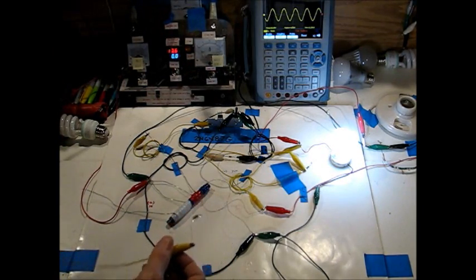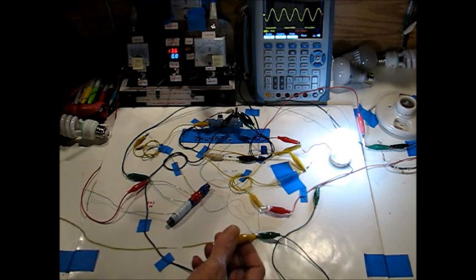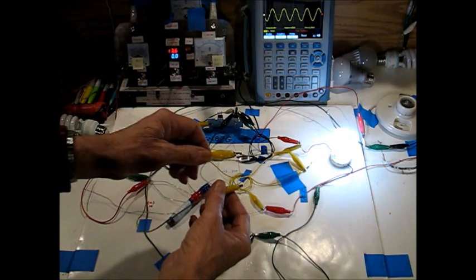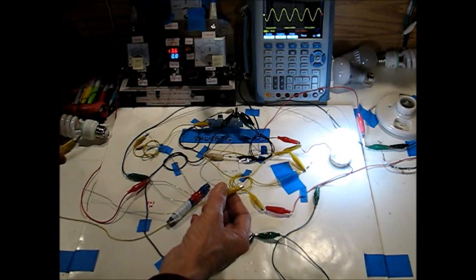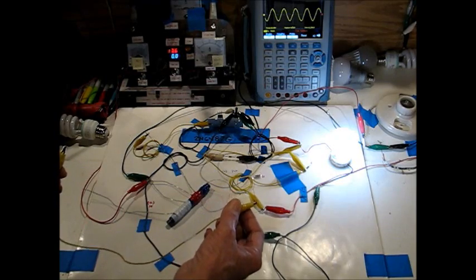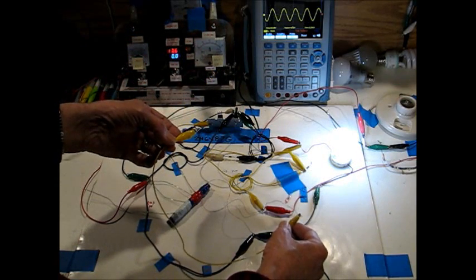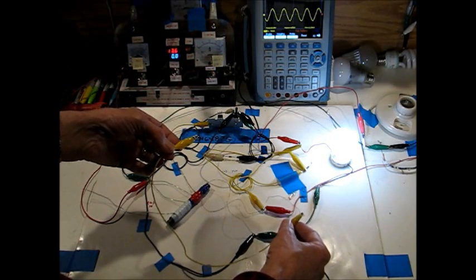This thing can put out, I've seen as high as 2500 volts. This is a 65 volt neon bulb. I've just got a jumper on here, nothing else. And you can see I'm not even touching that wire.